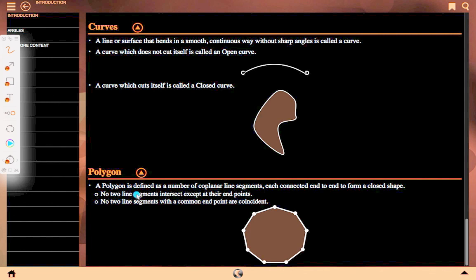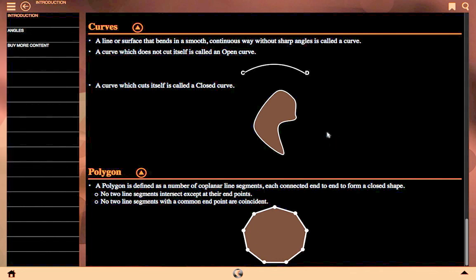Polygon: A polygon is defined as a number of coplanar line segments connected end to end to form a closed shape. No two line segments intersect except at their end points. No two line segments with a common end point are coincident. Number of sides may be different in polygons.